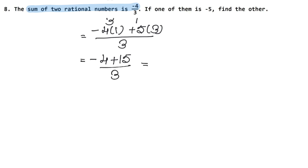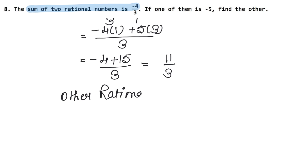One value is plus and one is minus, so we subtract. Hence the other rational number is 11 upon 3. Let's do the next question now.